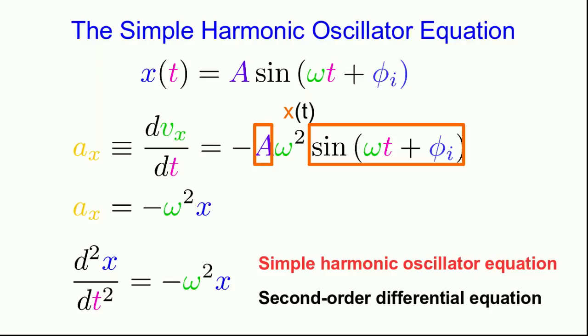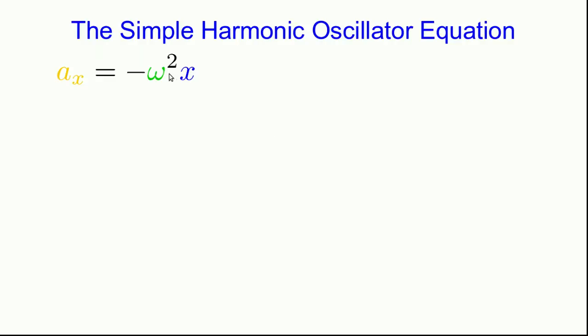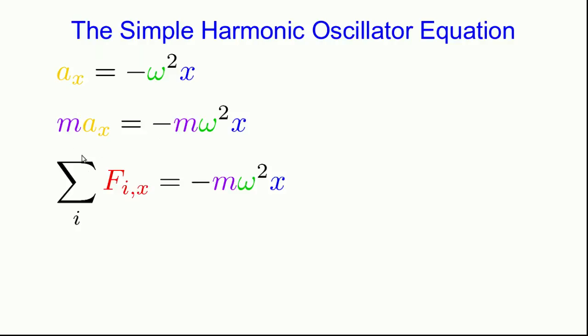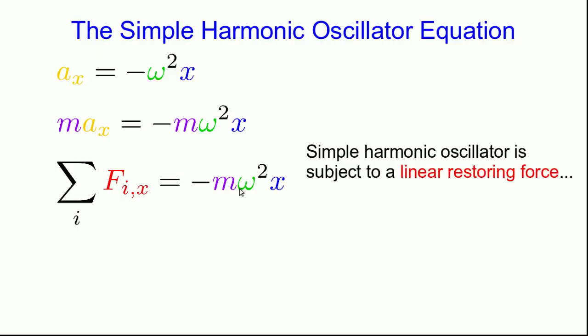This is an example of a second-order differential equation, which you'll study in a course on differential equations. Multiplying both sides by the mass m, we have m times a on the left — which is the sum of forces. This tells us the sum of forces is proportional to x, i.e., linear, and the negative sign indicates it's a restoring force. So the simple harmonic oscillator is subject to a linear restoring force, which is exactly how we defined a simple harmonic oscillator.